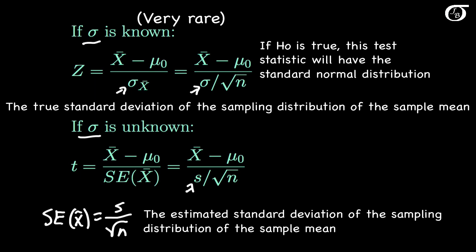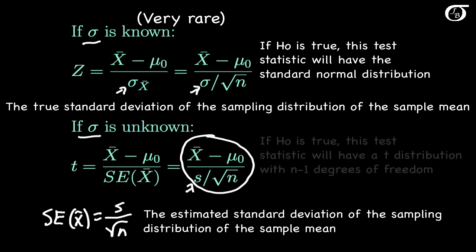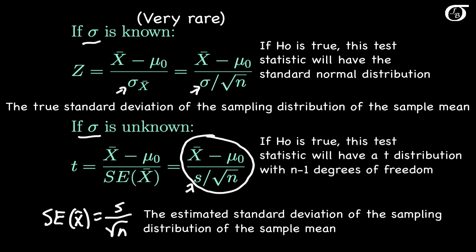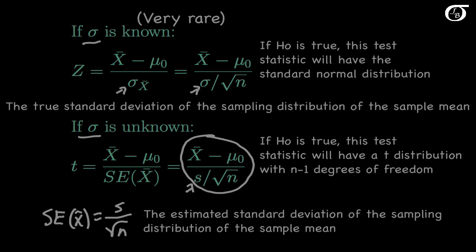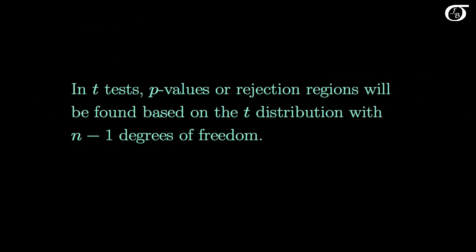When we replace sigma with s, something fundamental happens to the underlying mathematics, and this test statistic does not have the standard normal distribution. If the null hypothesis is true, this test statistic will have a t-distribution with n-1 degrees of freedom. In t-tests, p-values or rejection regions will be found based on the t-distribution with n-1 degrees of freedom.